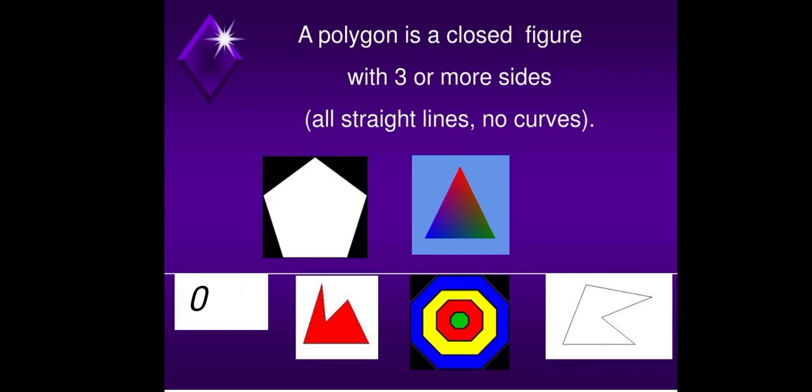Same with the next image, the triangle. It is also a closed figure with three straight lines. The rectangle also, and the other image right before the rectangle.